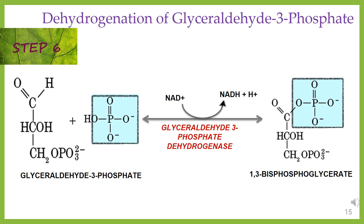Step 6: dehydrogenation of glyceraldehyde-3-phosphate, which undergoes two reactions. First, the enzyme glyceraldehyde-3-phosphate dehydrogenase transfers one hydrogen molecule from glyceraldehyde-3-phosphate to NAD⁺ to form NADH + H⁺. Second, glyceraldehyde-3-phosphate dehydrogenase adds a phosphate to oxidize glyceraldehyde-3-phosphate to form 1,3-bisphosphoglycerate.